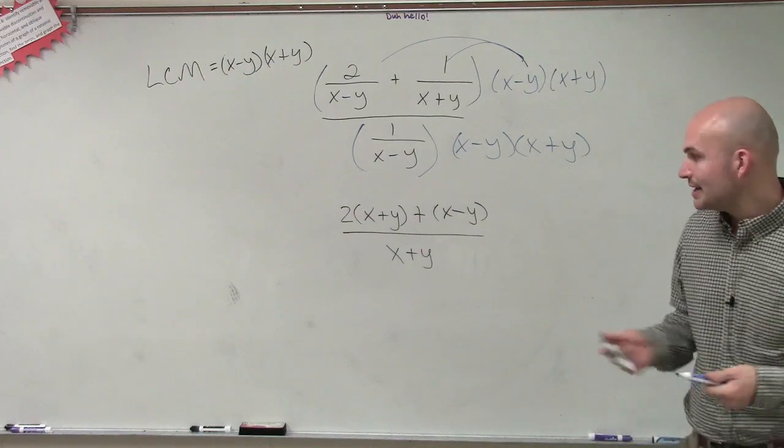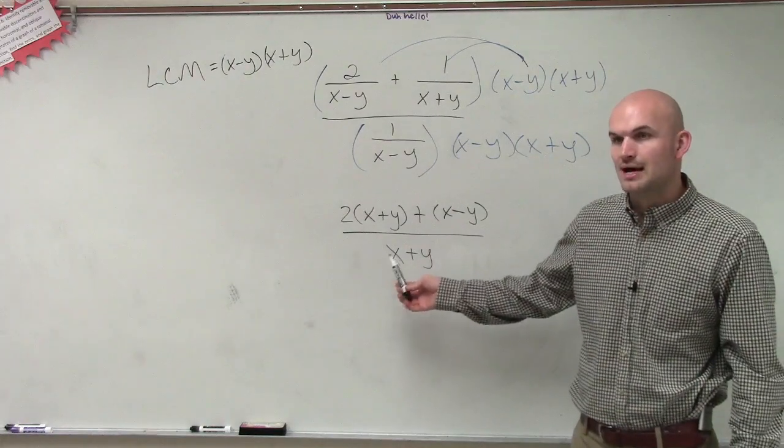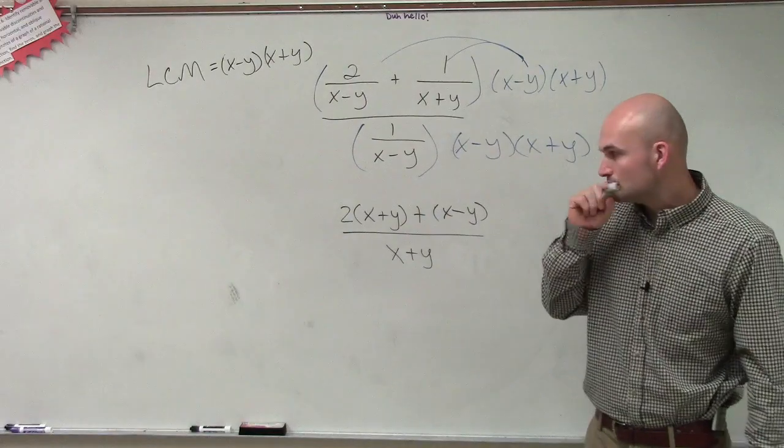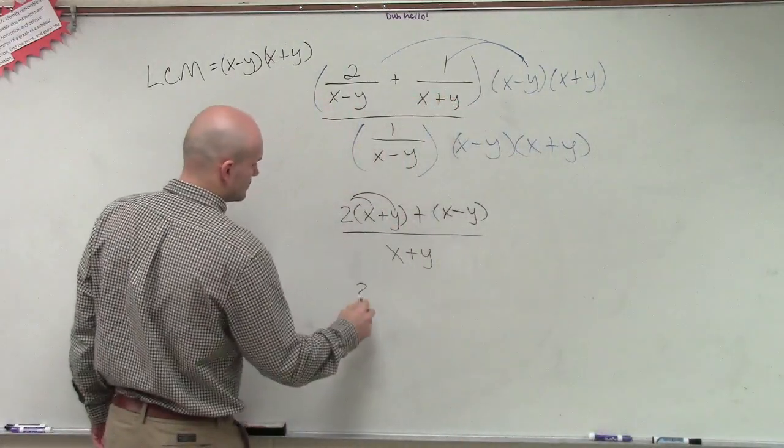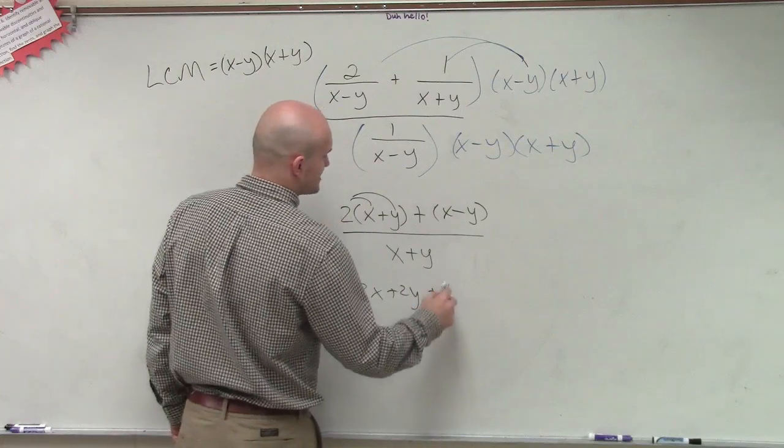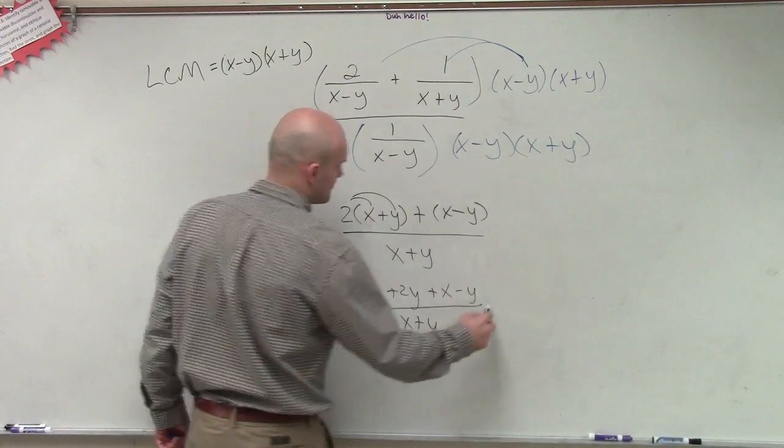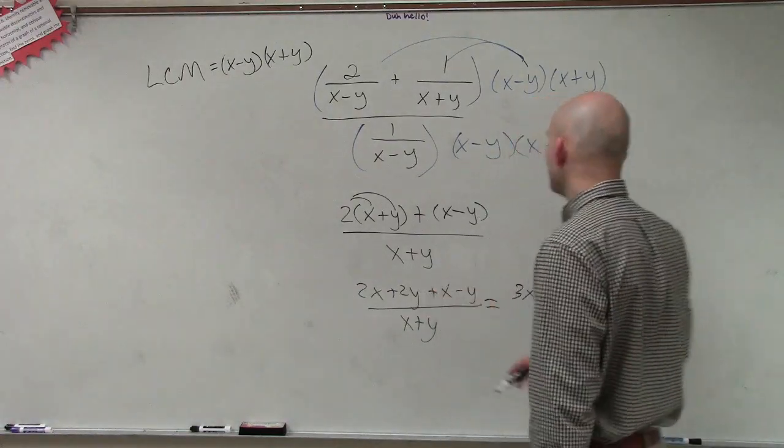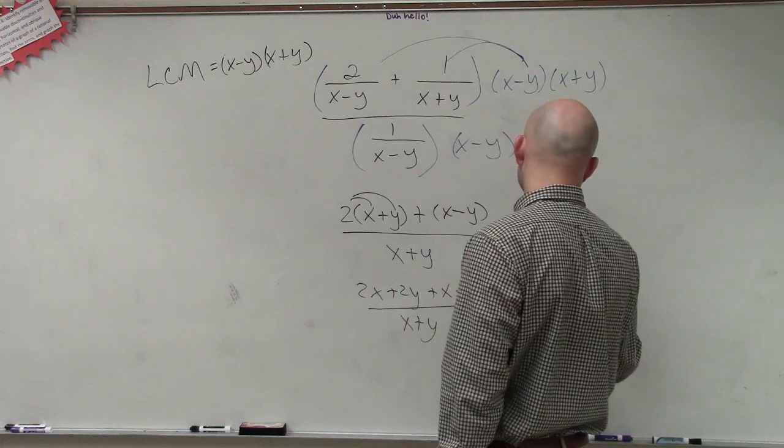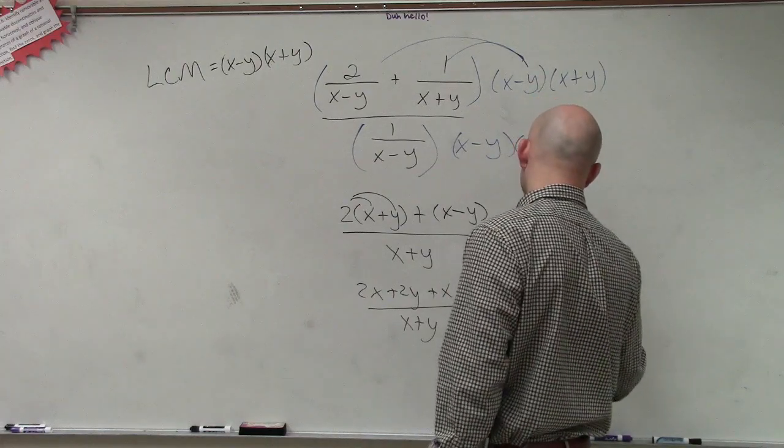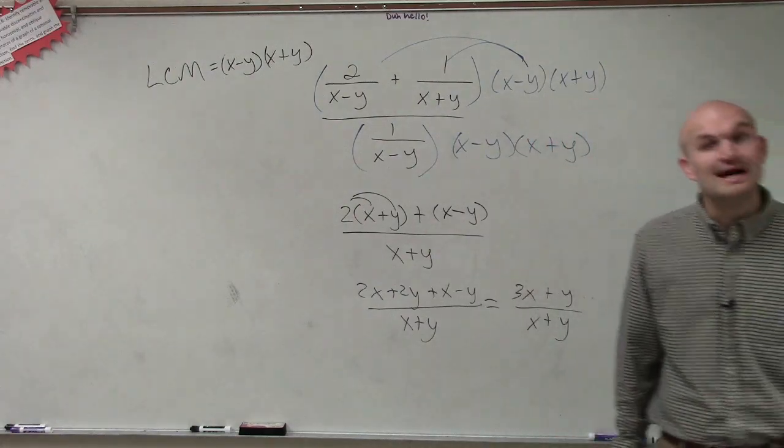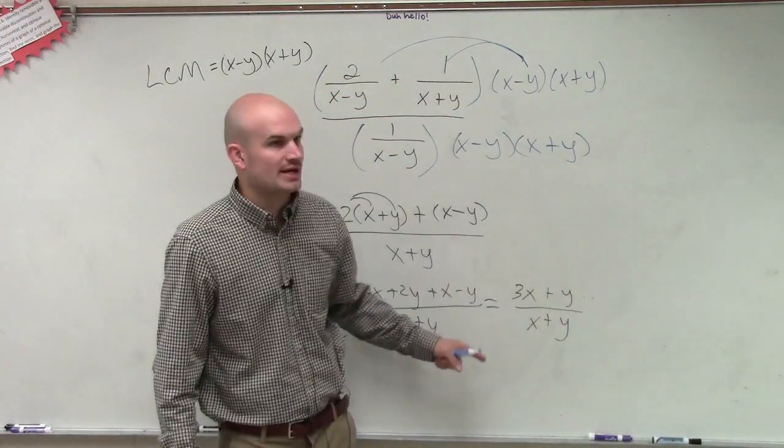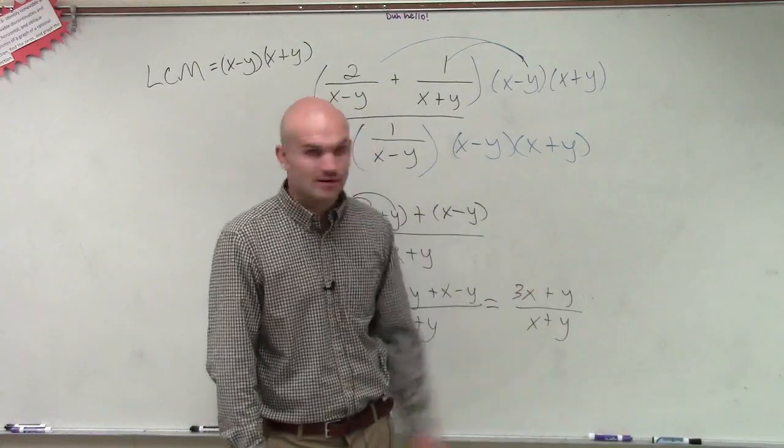So now what I'm going to do is I can't break this up because I have this addition. So you can't just say, oh, those divide out, because you have addition separating them. So what I want to do is now simplify this to give me 2x plus 2y plus x minus y over x plus y. And we'll say 2x plus x is 3x. 2y minus y is going to be y all over x plus y. And no, ladies and gentlemen, those do not cancel out. So we leave you with a final answer because you'd have to factor out a 3 for them to be able to divide out. So that would be your final answer.